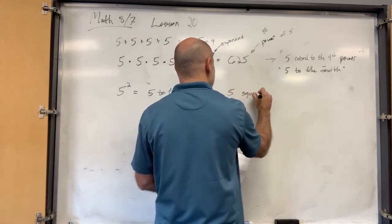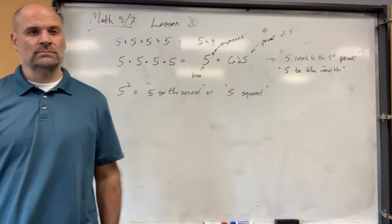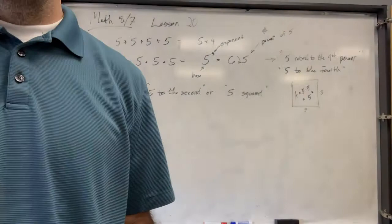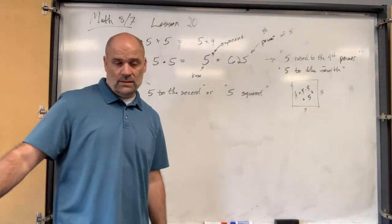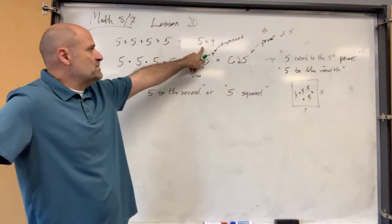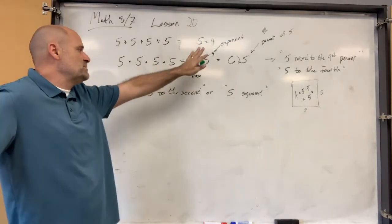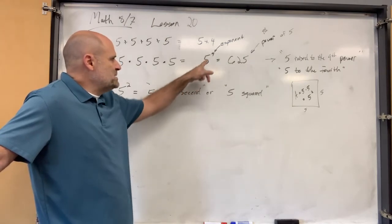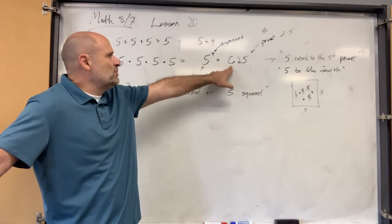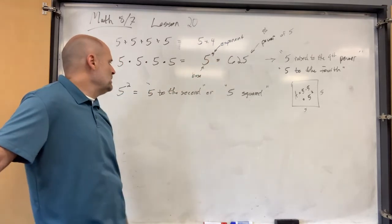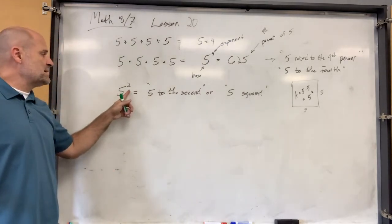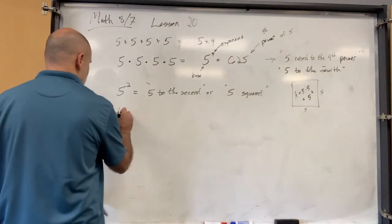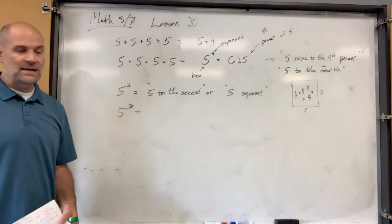Does anyone know why they use the word 'squared'? What does this have to do with squares? Just to recap: multiplication is when you add the same number multiple times — that's the shortcut, multiplication. When you multiply something a number of times, that's using exponents. 5 times 5 times 5 times 5 is just 5 to the 4th power or raised to the 4th power. The big number is the base, the little number up there is the exponent. 5 cubed, or 5 to the 3rd.